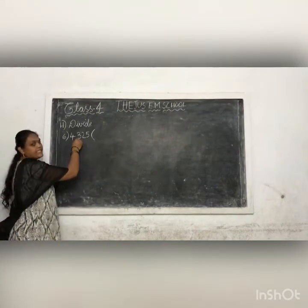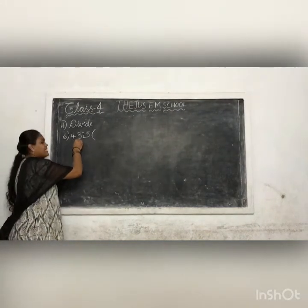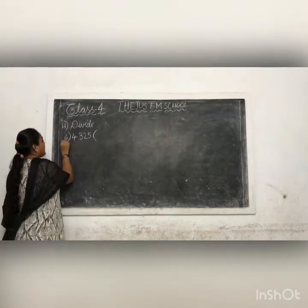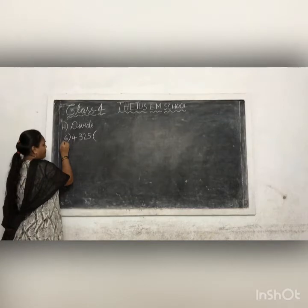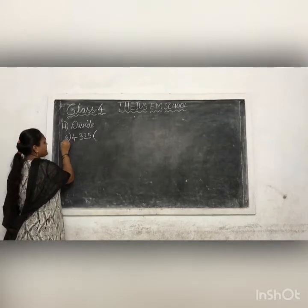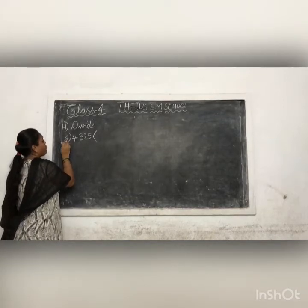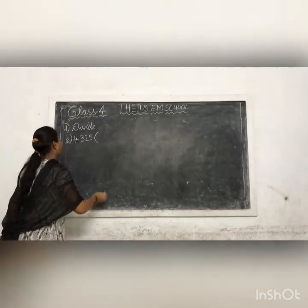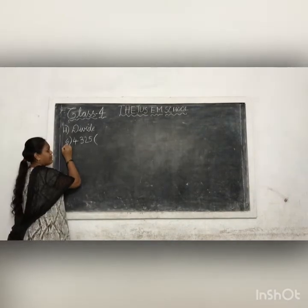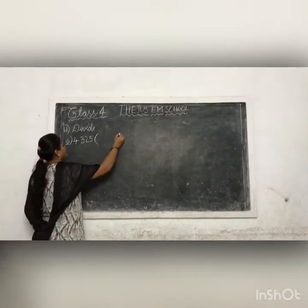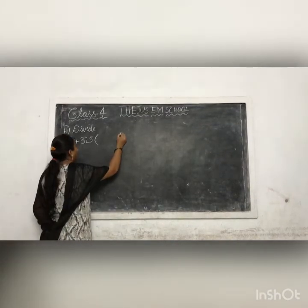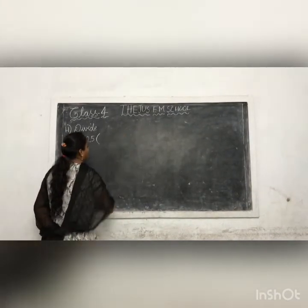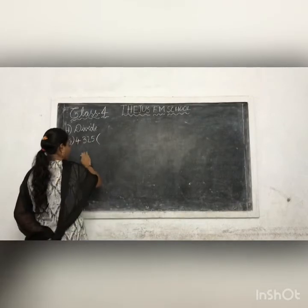Next one is division. So this is the 6th table. We see the 6th table first, and we will write the 6th table.